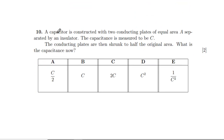Question 10: a capacitor has two conducting plates of area A separated by an insulator with capacitance C. The plates are shrunk to half the original area. Since capacitance is proportional to plate area — it determines how much charge can be stored — halving the area halves the capacitance to C/2.